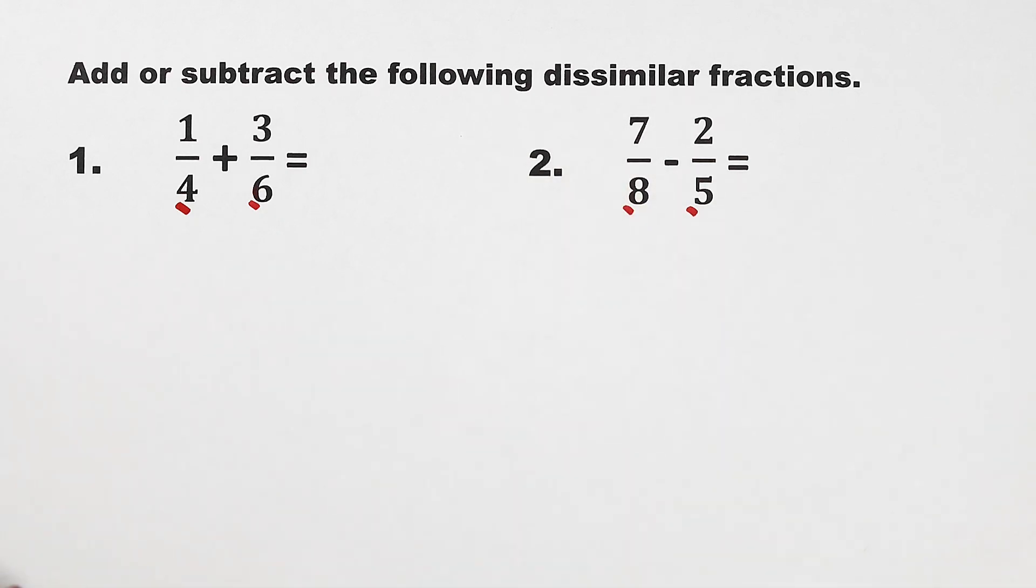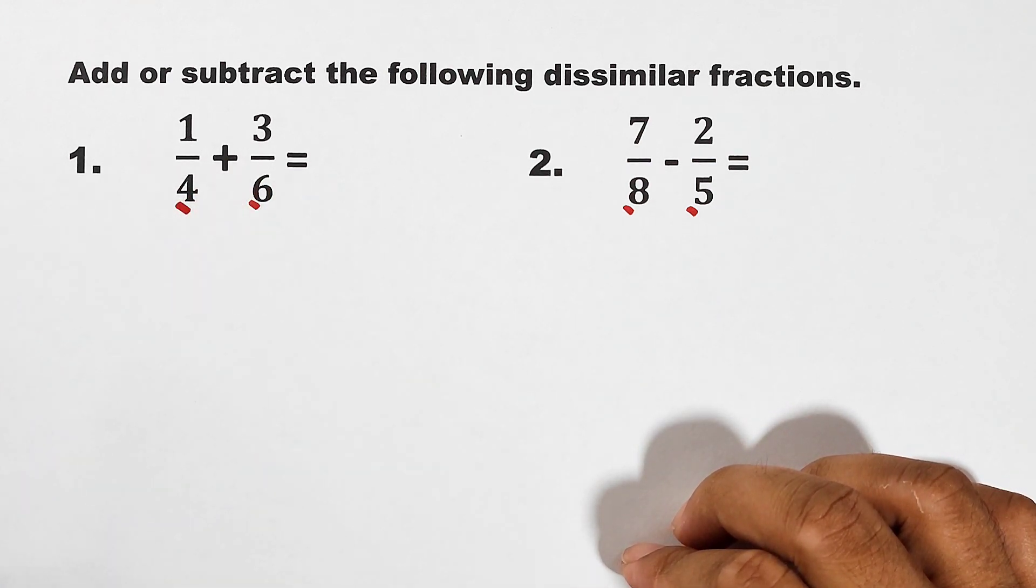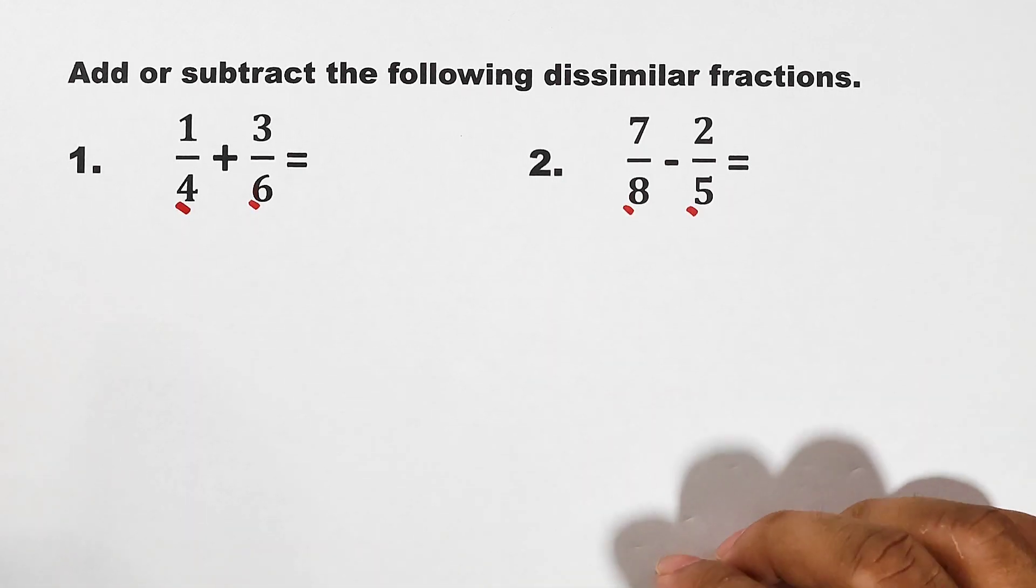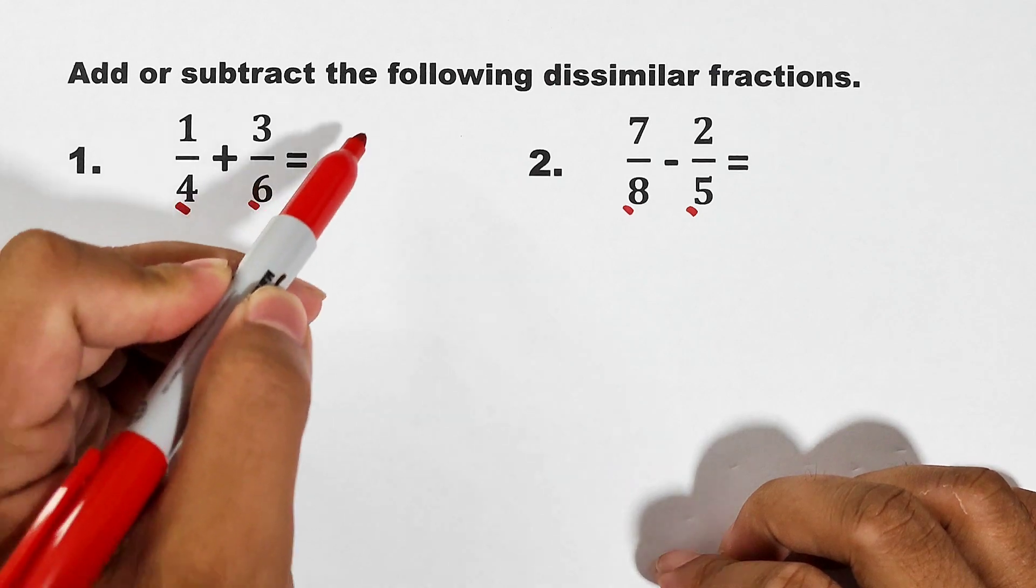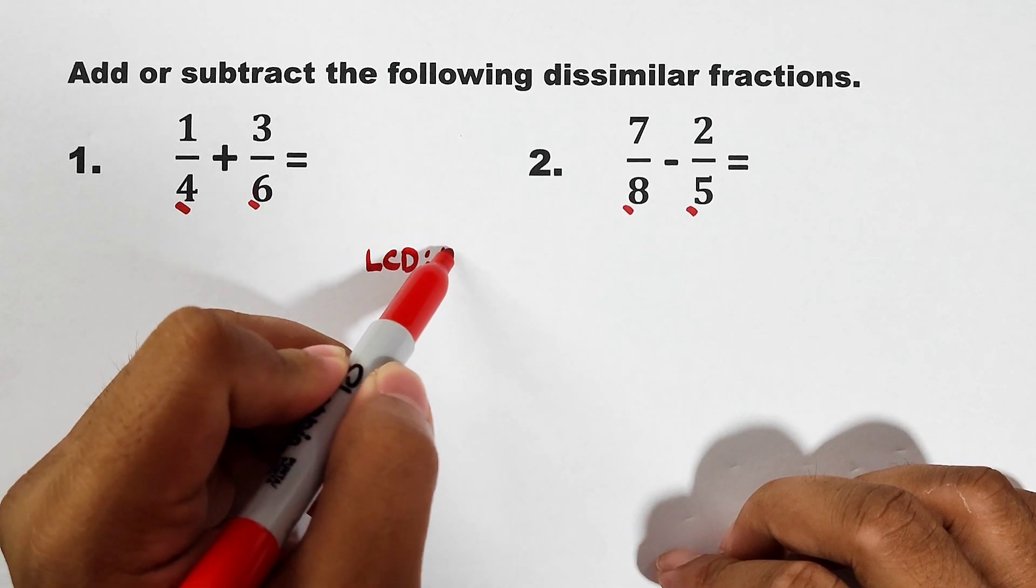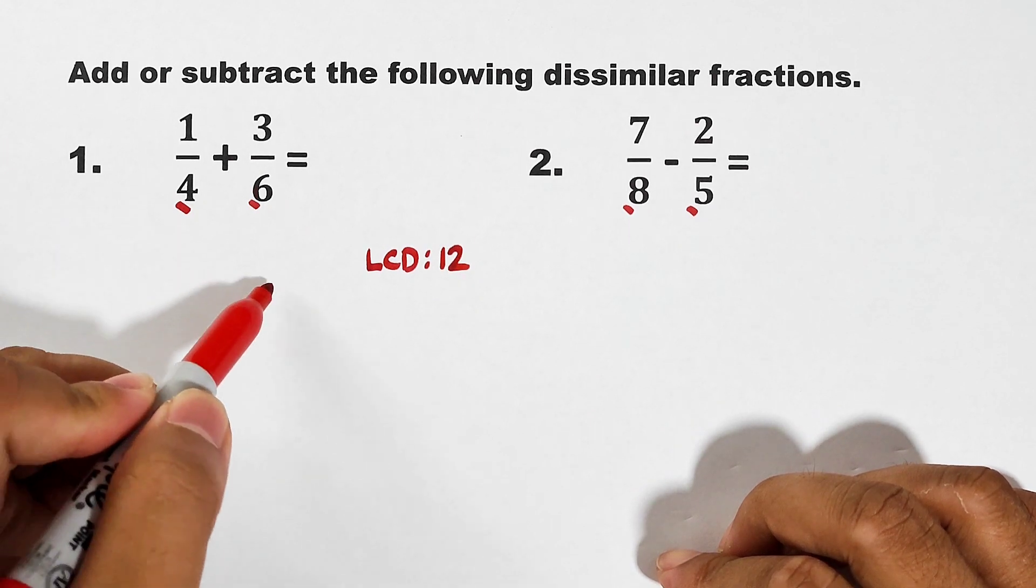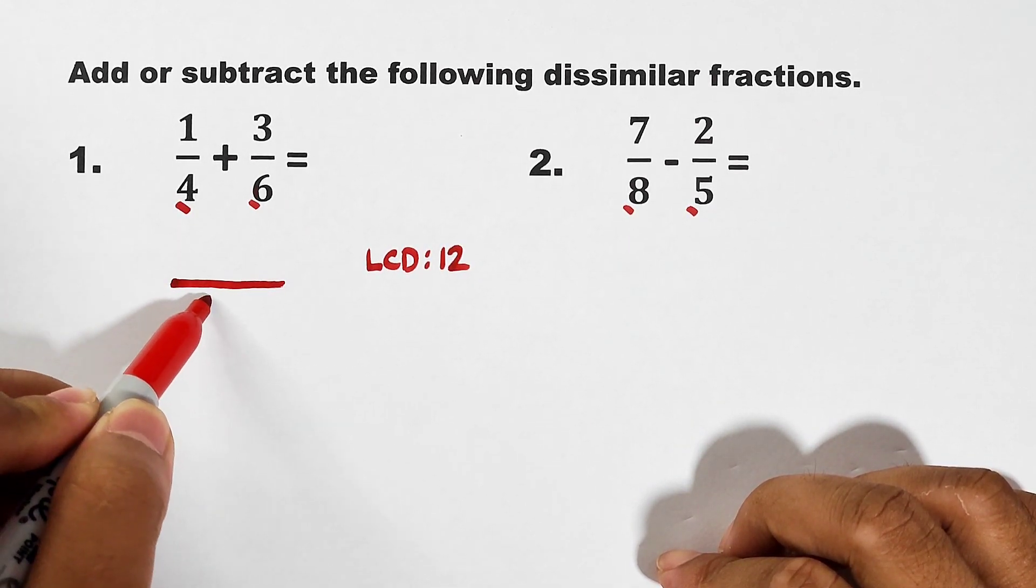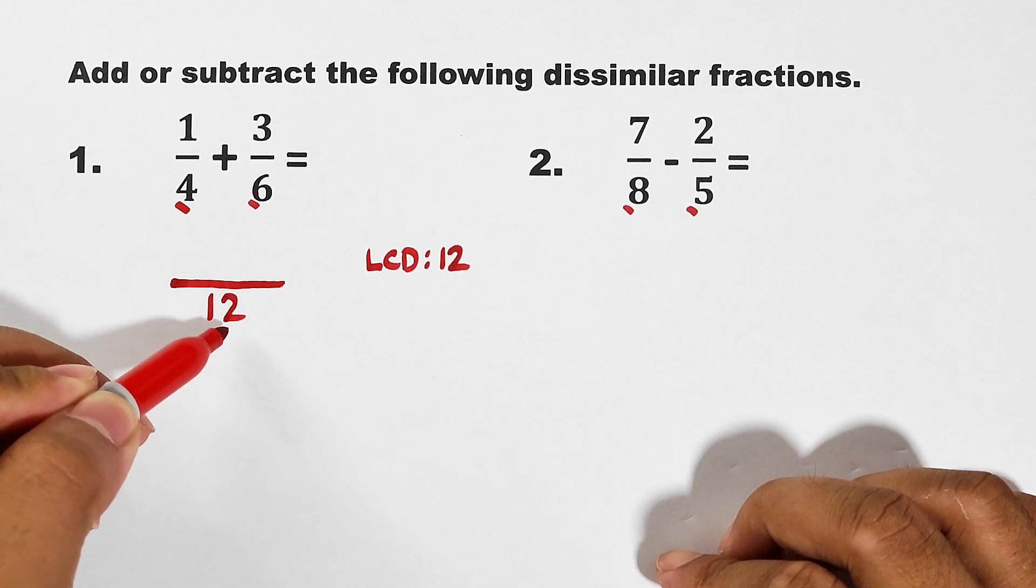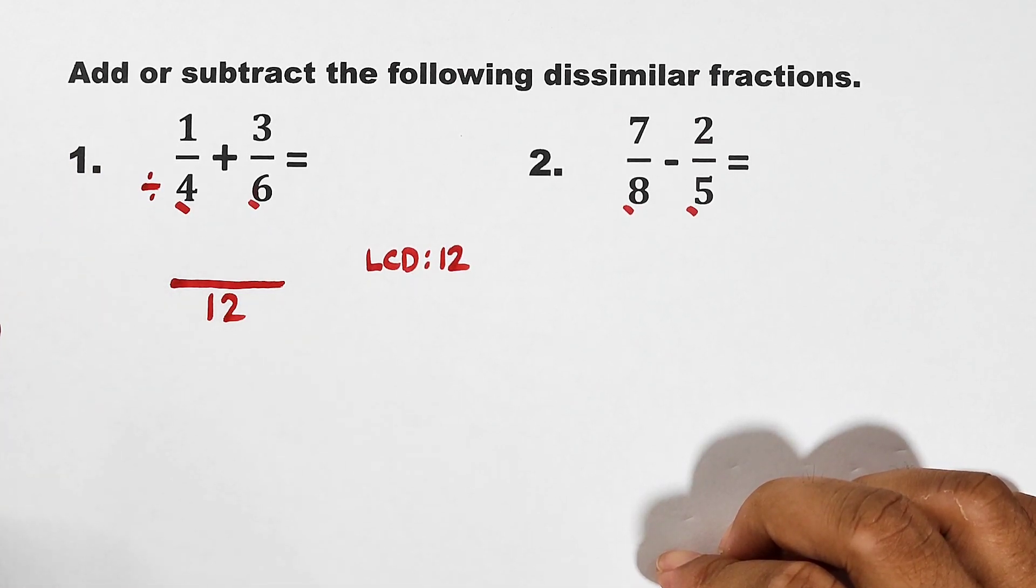So ano yung first step na gagawin natin? First step that we need to do is to identify what is the least common denominator between 4 and 6. In that case, magiging parehas yung kala ng denominator. The LCD of 4 and 6 is definitely equal to 12. Ito yung gagamitin natin throughout the process. So gagawin nyo dito, lalagay nyo lang yan dito sa ilalim, 12. And then this new denominator or least common denominator will be divided first in your original denominators.